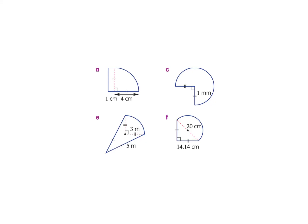With these questions, we're looking at circumference of a circle. We'll remember the formula for circumference, which is 2 times pi times r, which is the radius.